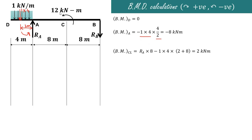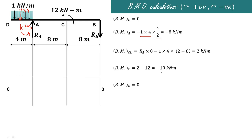Just to the left of C, without considering the external 12 kilonewton meter moment, the forces present are RA producing a clockwise moment with perpendicular distance 8, giving RA into 8. The UDL of 1 into 4 produces an anti-clockwise moment about C with perpendicular distance 2 plus 8 equals 10, giving minus 1 into 4 into 10. The bending moment just left of C is 2 kilonewton meters. At exactly point C, adding the anti-clockwise external moment of 12 gives 2 minus 12 equals minus 10 kilonewton meters. At point B the bending moment is 0.